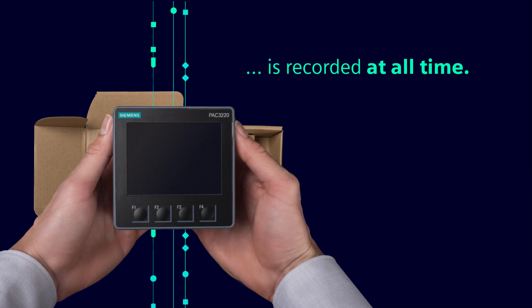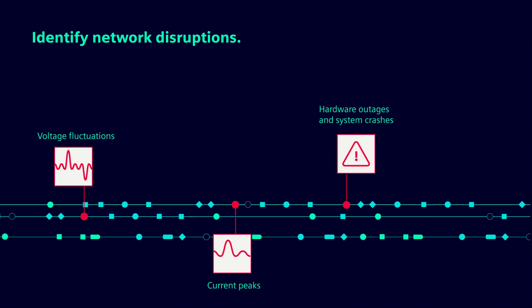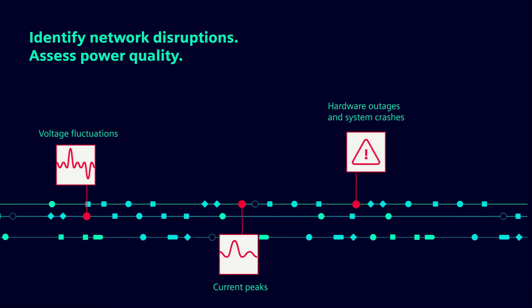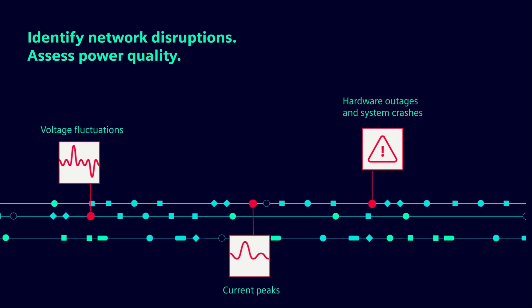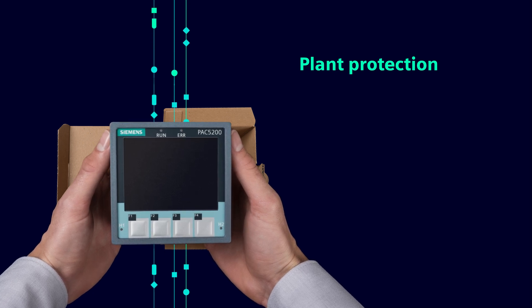Centron Multifunction Measuring Devices make this possible. It isn't always your own plant that gets in the way of a smooth workflow. Often, it's increasing voltage fluctuations that impact power quality and thus put your production or power supply at risk. Measuring power quality using Centron Meters protects against system outages.